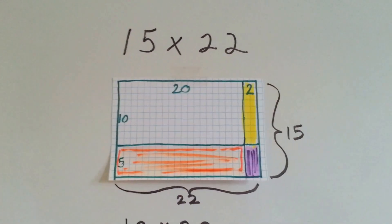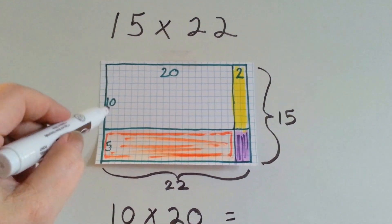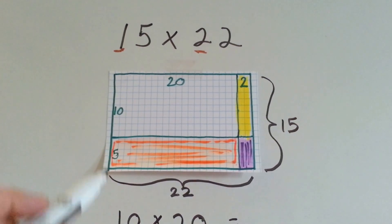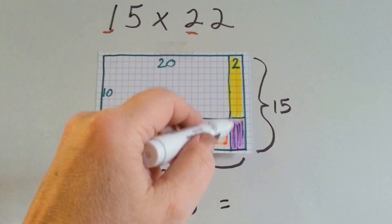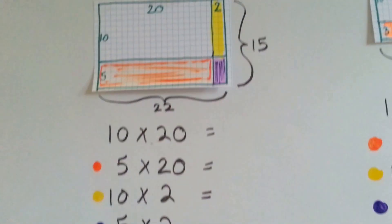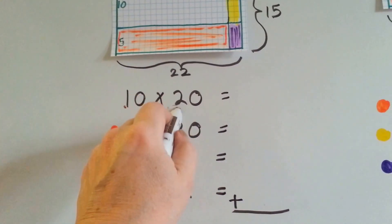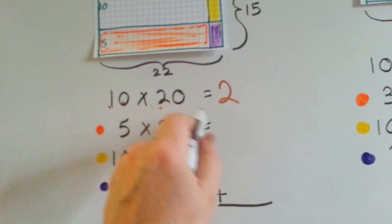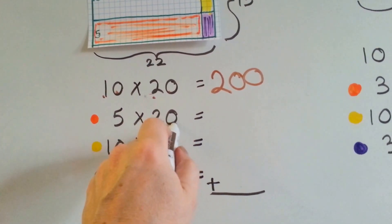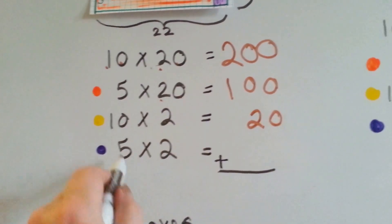15 times 22. There's 15 spaces going this way and 22 going this way. So, I broke it into 10 times 20. This 10 times this 20. And that left a little 2 left over times 10. And then we've got a 5 times 20 and a 5 times 2. So, when we do them, you can see they're all color coordinated. 10 times 20. 1 times 2 is 2. And then we can just add the two 0's. 5 times 2 is 10. And add a 0 at the end. Makes 100. 10 times 2 is 20. And 5 times 2 is 10.